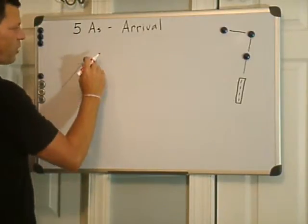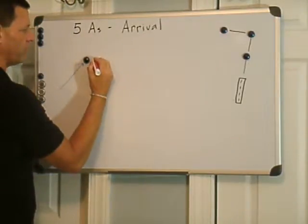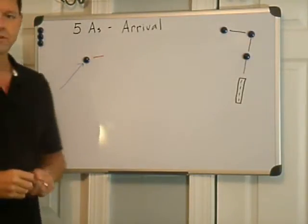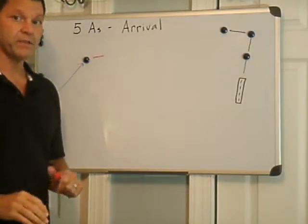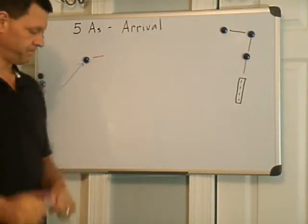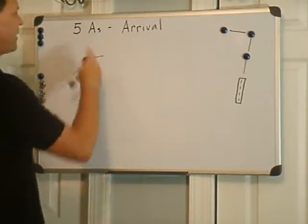Now, when I pass RMAC, I'm beginning the arrival phase of flight. And the way I like to keep myself organized during the arrival phase is I use something called the Five A's of the arrival.